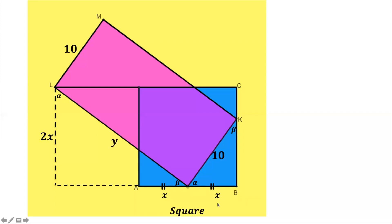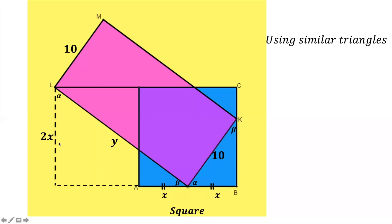Now we want to find the length Y. Using similar triangles: the side 2X faces angle beta in the large triangle, and the side X faces angle beta in the small triangle. Y is the side facing 90 degrees. So using the ratio of corresponding sides, Y divided by 10 equals 2X divided by X.